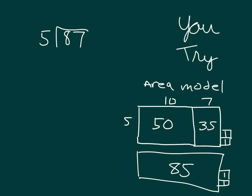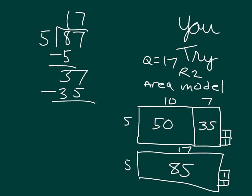So, from our area model, the quotient is 10 and 7, which is 17. And the remainder is 2. Let's show our long division work to support our response. 5 goes into 8 tens one whole time, because 1 times 5 is 5. 8 minus 5 is 3. We bring down the 7. We take those 37 ones, and when we divide by 5, we get 7, because 7 times 5 is 35. And 37 minus 35 is 2. 2 is our remainder.